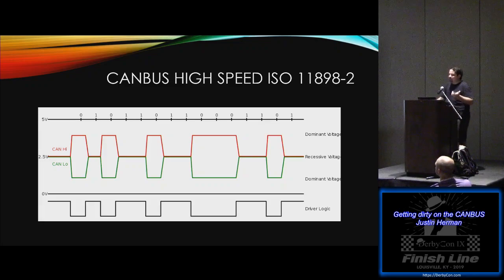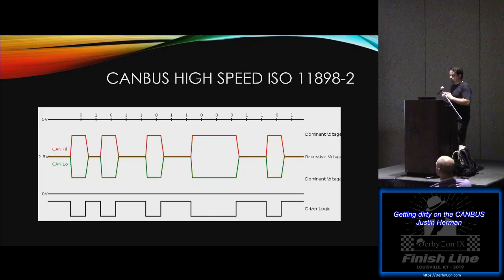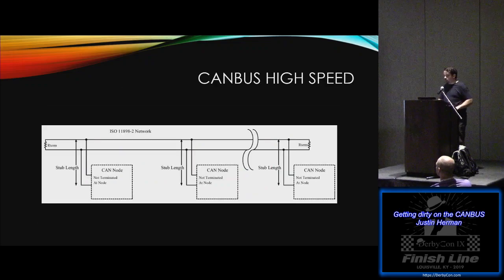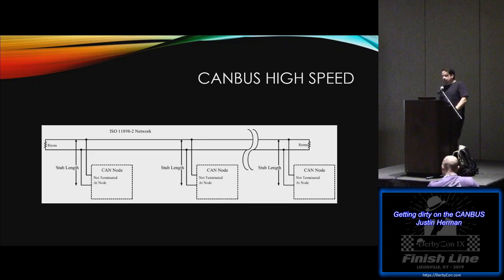CAN bus high speed uses a differential between both the high voltage and low voltage. Both signals — high and low — are driven to their respective voltage potentials, which signifies a zero; when they return, they signify a one. The high speed network was all on a standardized bus system with a stub length of no more than 30 centimeters. The linear bus is terminated at both ends with 120-ohm resistors.